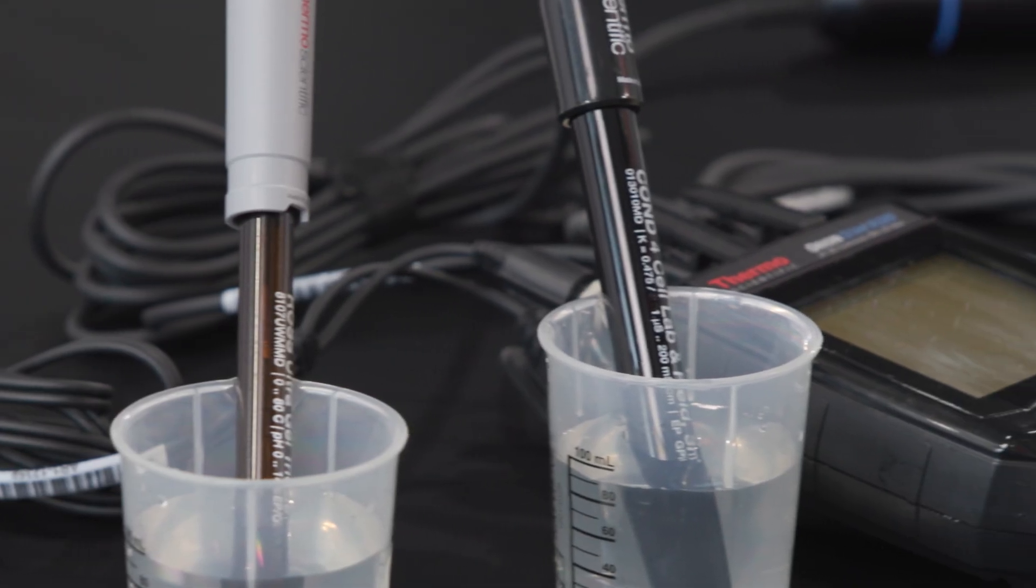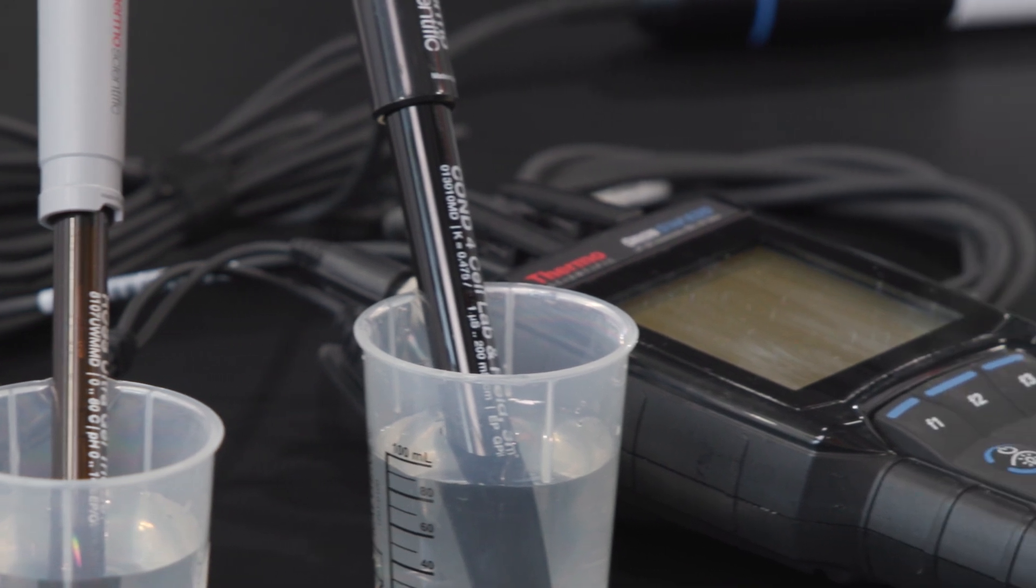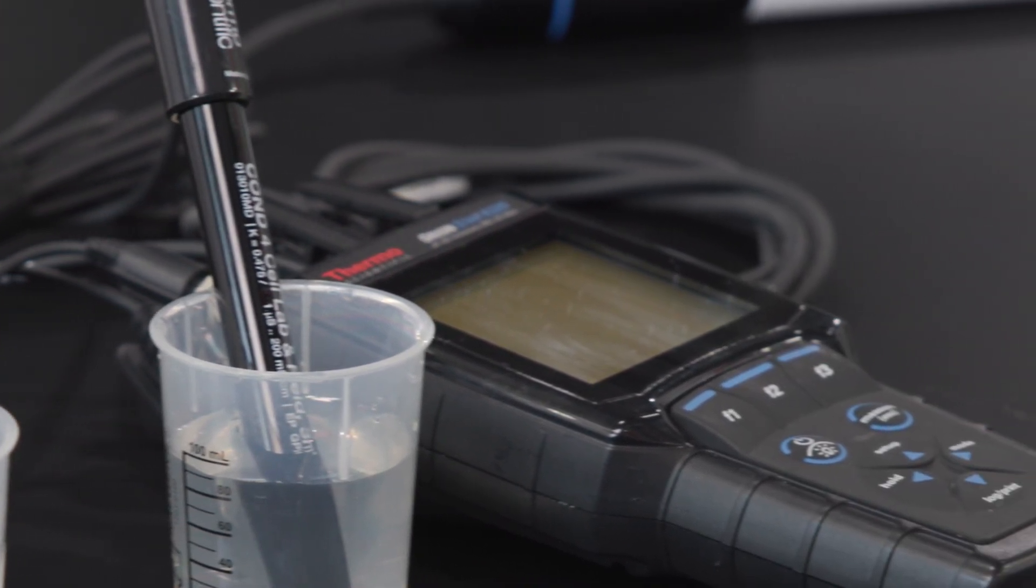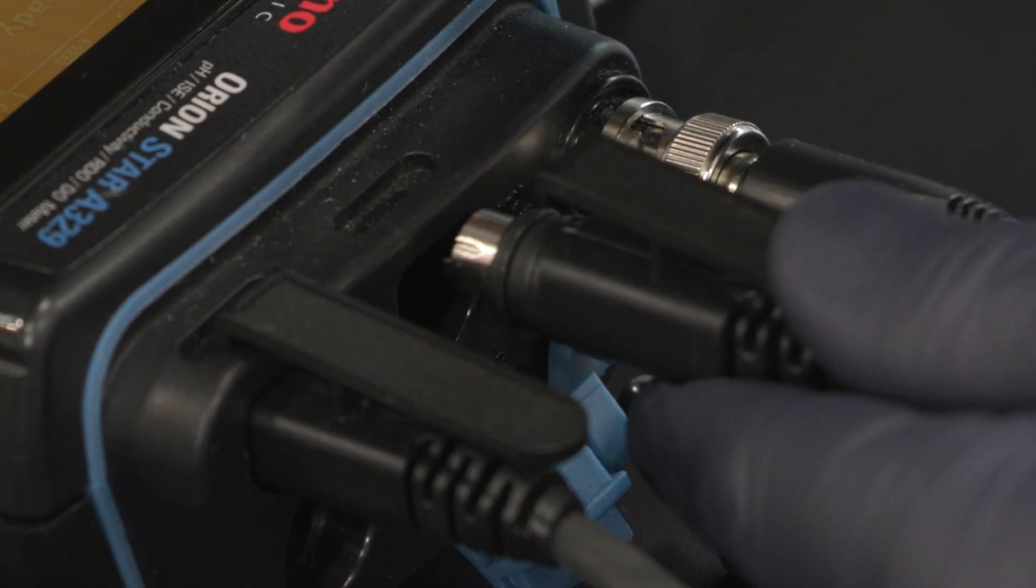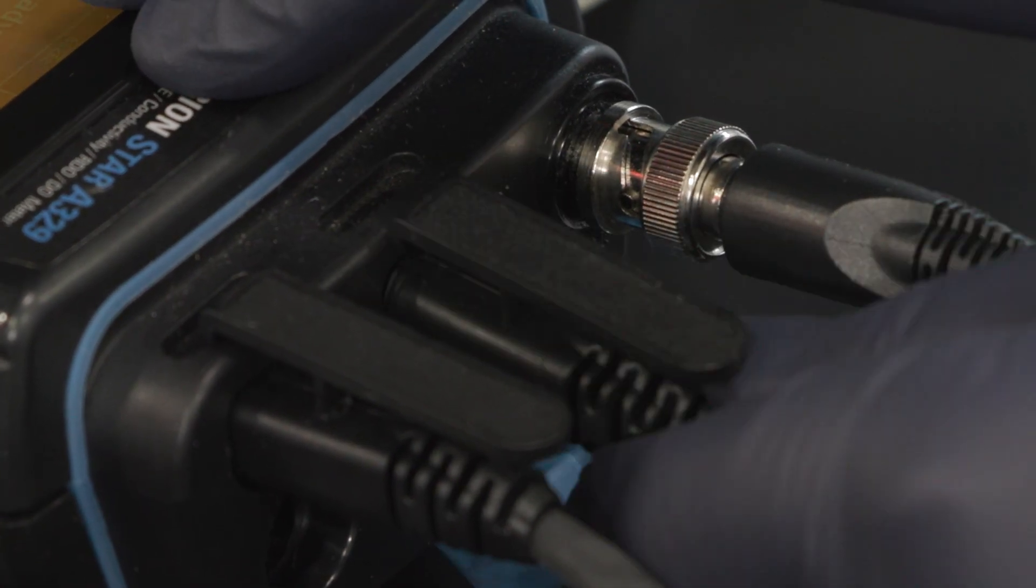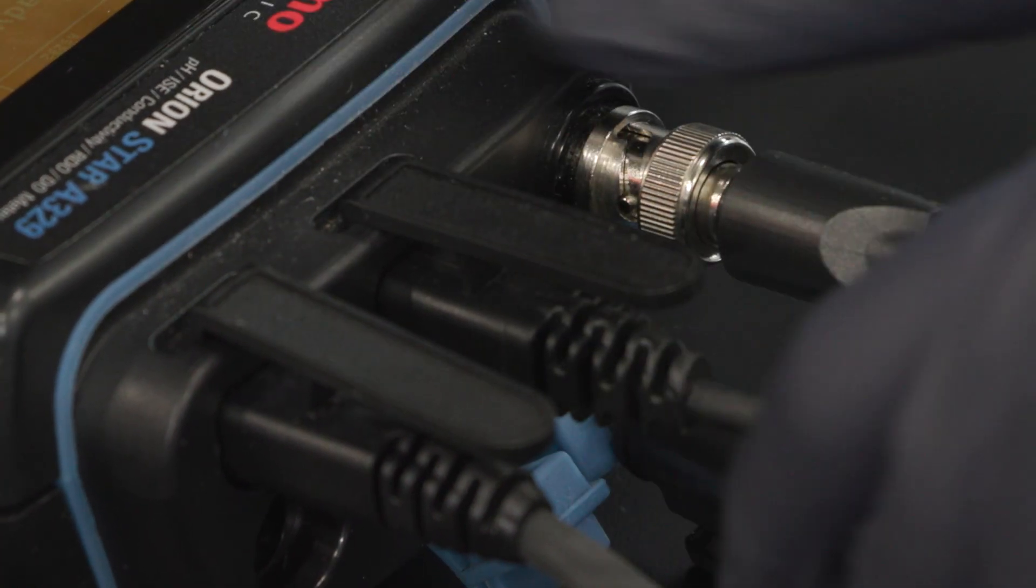If testing multiple parameters is a requirement, consider a meter with two or more channels. Multi-channel meters offer the flexibility and support of concurrent measurements. They eliminate the need for multiple instruments and help provide a more complete analysis.